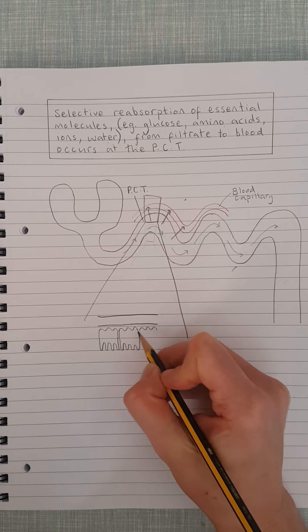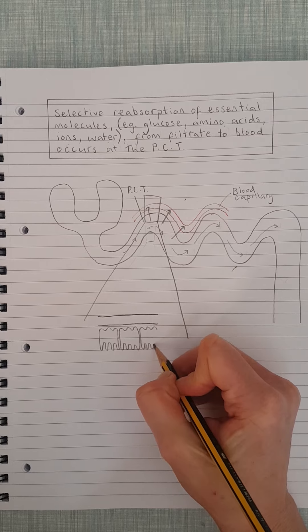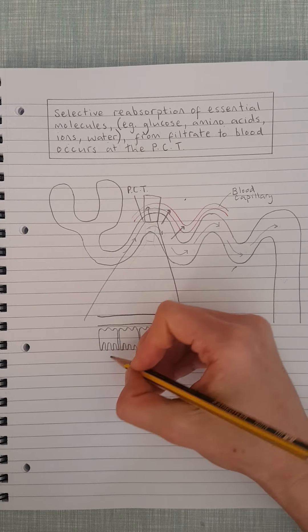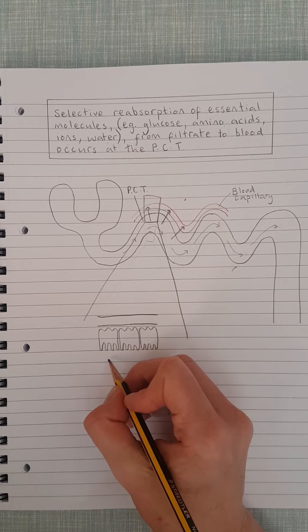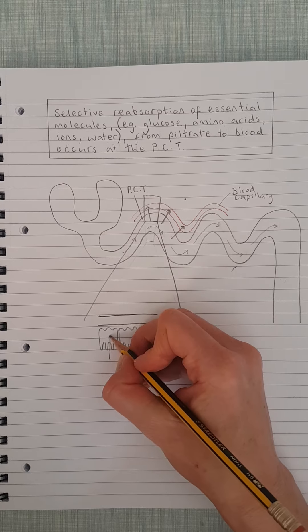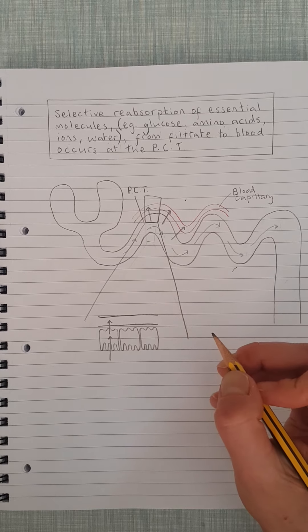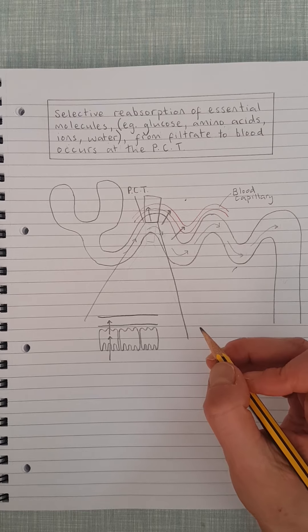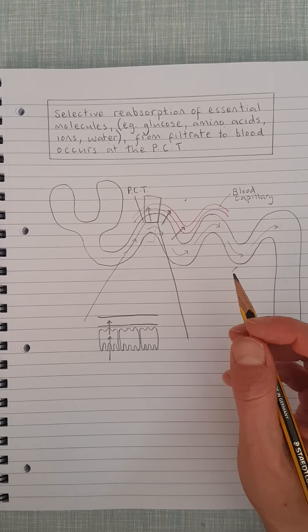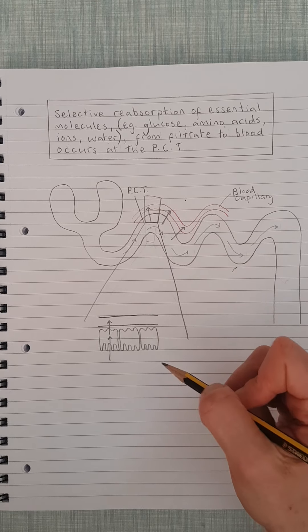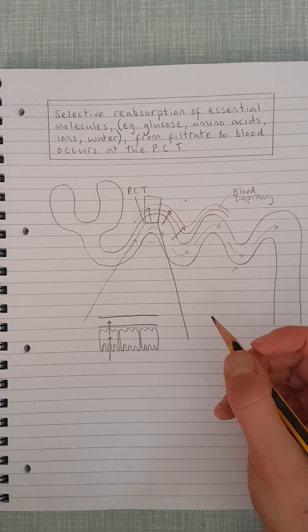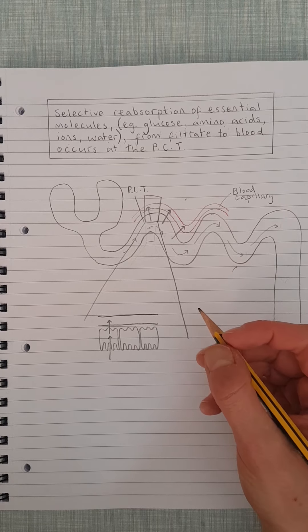And you're probably thinking 'microvilli, I know what they're for.' And I'll just draw one more. And then what's happening is anything that's inside the filtrate that needs to go back into the blood will go into this cell and then from the cell into the capillary. It's a little bit like the process of the absorption of glucose from the gut, only it's not the gut but the same kind of concepts apply.